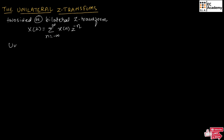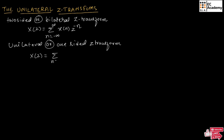The unilateral Z transform, or one-sided Z transform, can be represented as X of Z is equal to summation of n is equal to 0 to infinity, X of n, Z to the power of minus n. From this, we can understand that the two-sided or bilateral Z transform will range from minus infinity to infinity, but the unilateral or one-sided Z transform will range from 0 to infinity.